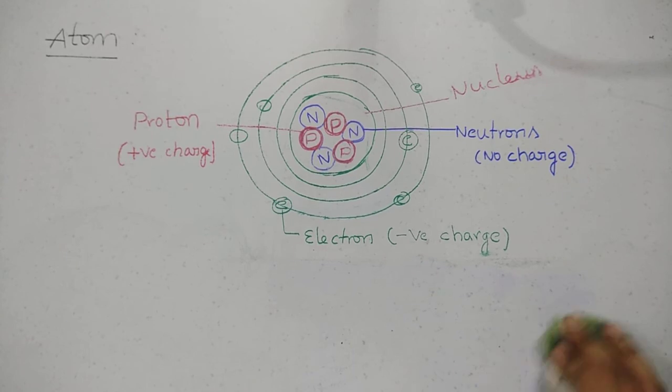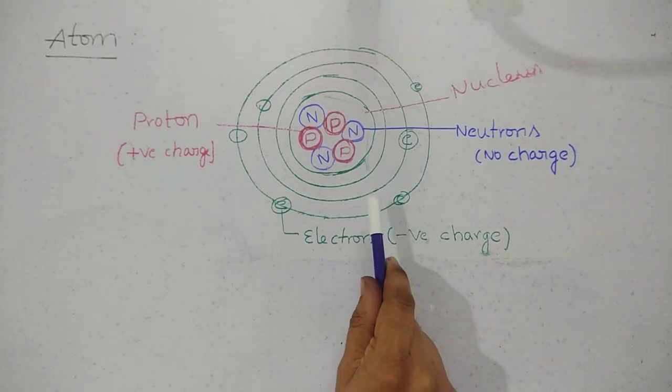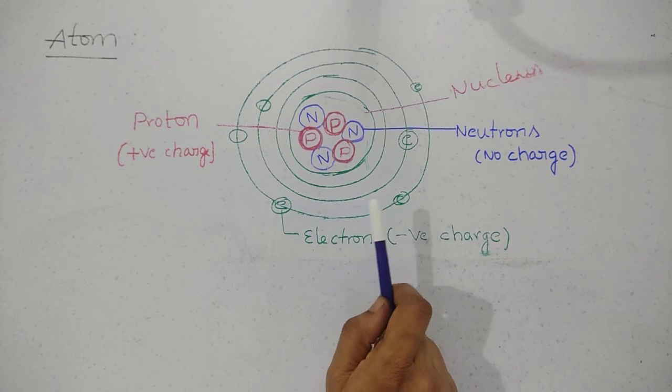The number of protons in the atom indicates what type of element it is and the number of electrons determines what type of change it can undergo.